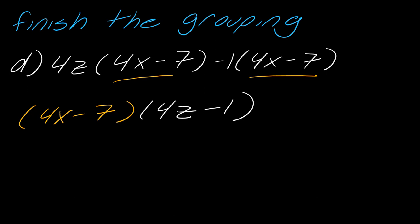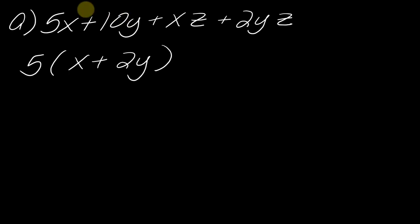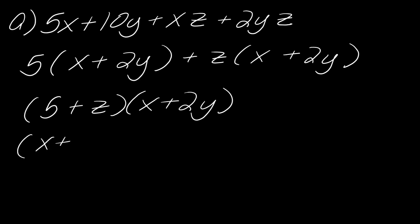Now we've got the gist, so let's look at whole problems. Going through this one together: I've got 5x plus 10y and then xz plus 2yz. Focusing on the first two terms, the GCF is 5, so this is 5 times (x plus 2y). In the second two terms, they both have a z in common, so I'll factor out z, leaving x plus 2y. Now I check — are the parentheses the same? Yes. So I can factor this as (5 plus z)(x plus 2y), or vice versa — it doesn't matter which way you go.